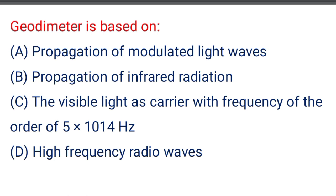Next question: geodimeter is based on — option A: propagation of modulated light waves, option B: propagation of infrared radiation, option C: the visible light as carrier with frequency of the order of 5×10¹⁴ Hz, option D: high frequency radio waves. The correct answer is option A: propagation of modulated light waves.